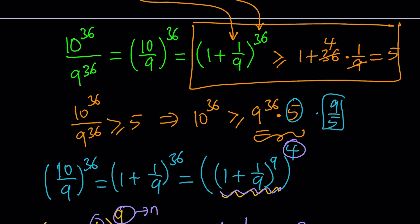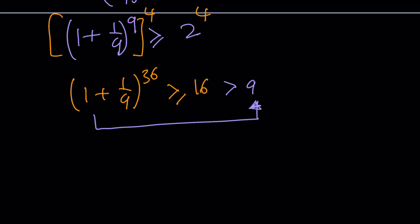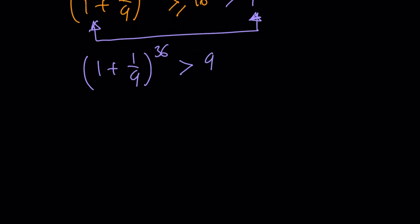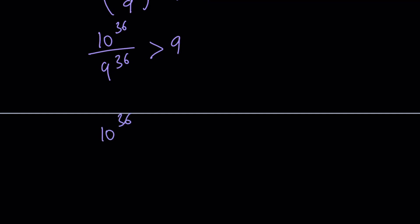16 is obviously much bigger than 9 and 5. Since (10/9)^36 ≥ 16 > 9, we can write: 10^36 divided by 9^36 is greater than 9. Expanding this, 10^36 is greater than 9^36 times 9, which equals 9^37. Therefore 10^36 is greater than 9^37.